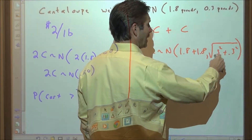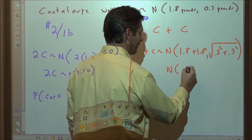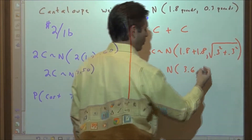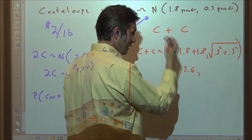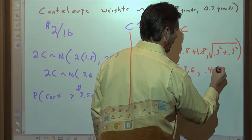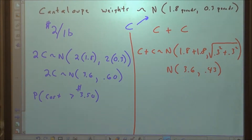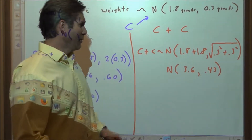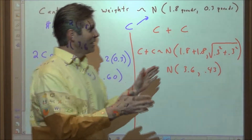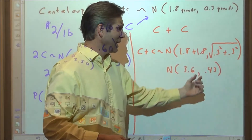So in this case we add 0.3 squared plus 0.3 squared to get our new variance, which is 0.09 plus 0.09. Then we take the square root of that sum to get the new standard deviation. The mean is 3.6, and the new standard deviation is the square root of 2 times 0.3, which is about 0.43.